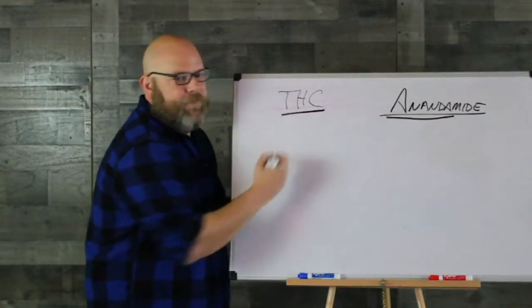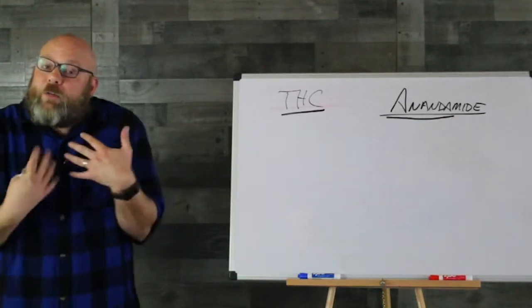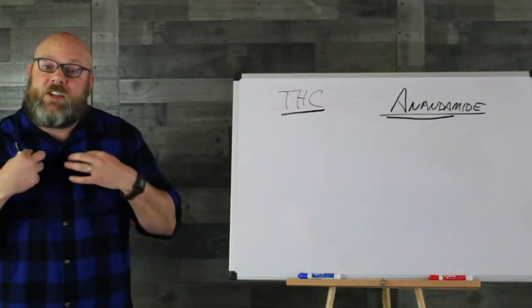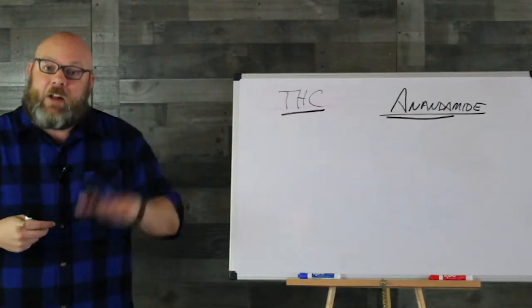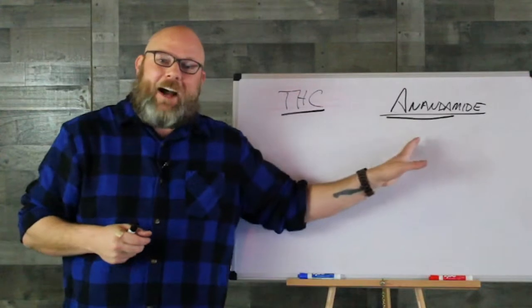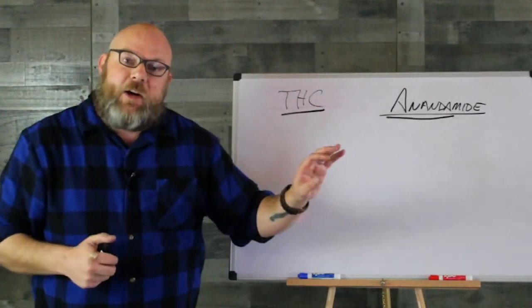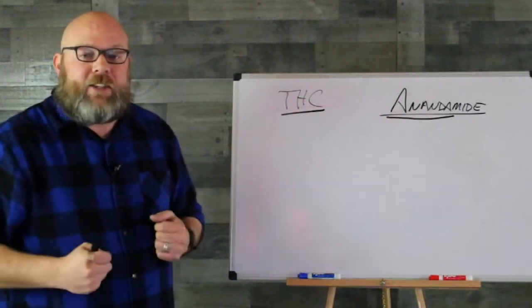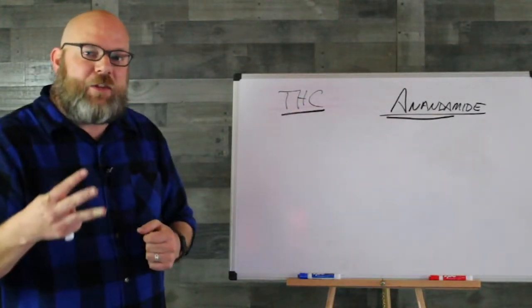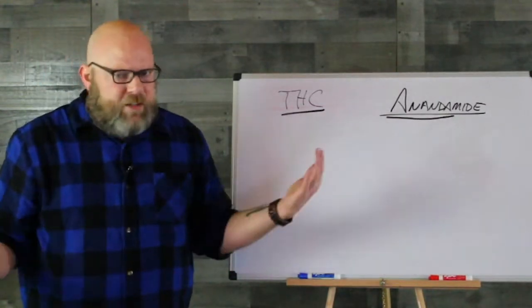So THC is the drug that dresses up as anandamide. In order for THC to get into the brain, it dresses up as anandamide, floods the gap, which runs the risk of our anandamide factories shutting down, and it plugs into anandamide receptors, which is the risk of THC and anandamide tolerance. We know these three things. But what does anandamide do? What does it feel like?